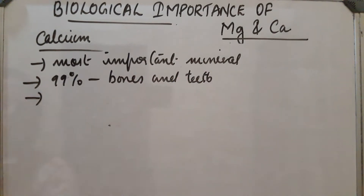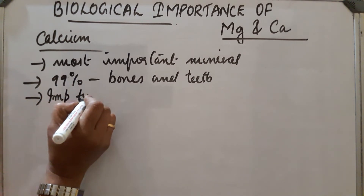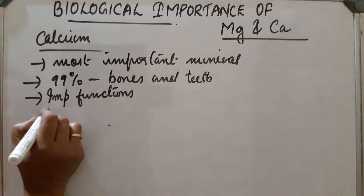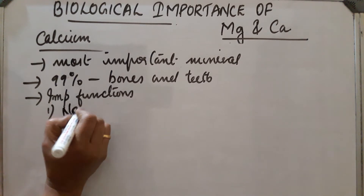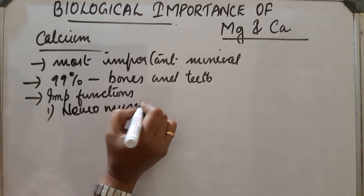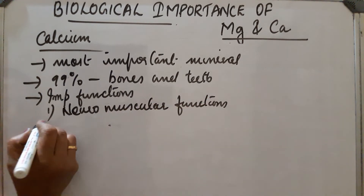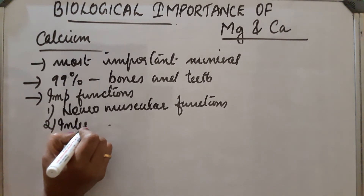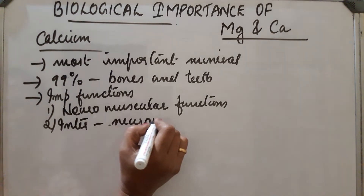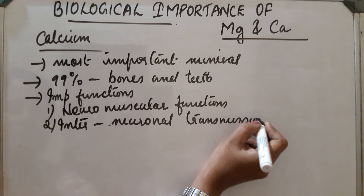Important functions of calcium: first, it is used for neuromuscular functions. Second, it is used in inter-neuromuscular transmission.